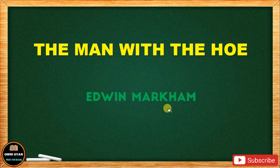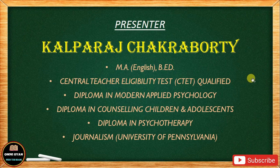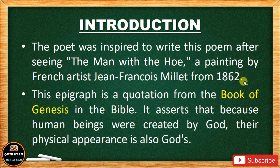So 'The Man with the Hoe,' class 10 additional English, written by Edwin Markham. The poem is quite long and I have decided to complete the whole poem in one video. You can divide the video into two or three parts as you feel convenient — watch a little today, the rest tomorrow, and the remaining part the next day. I have explained line by line, not stanza by stanza, which will help you in reference to context.